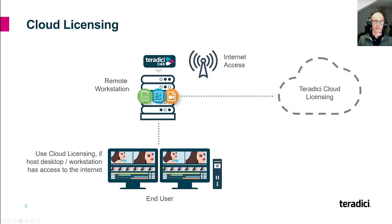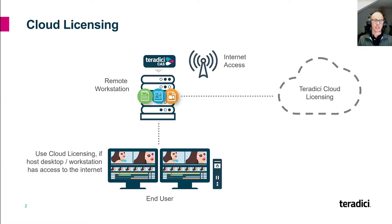Let's see how the cloud-based licensing works. Since we host the licensing for you in the cloud, there is no need for you to deploy another server. This eliminates complexity of your overall infrastructure and decreases management overhead. Your workstations only require internet access via TCP port 443.